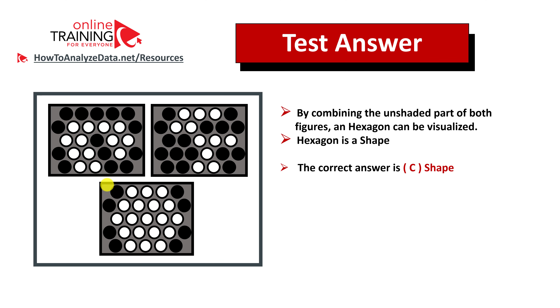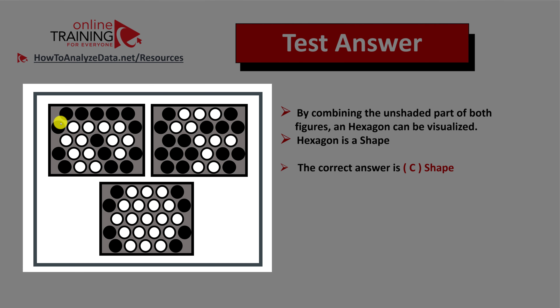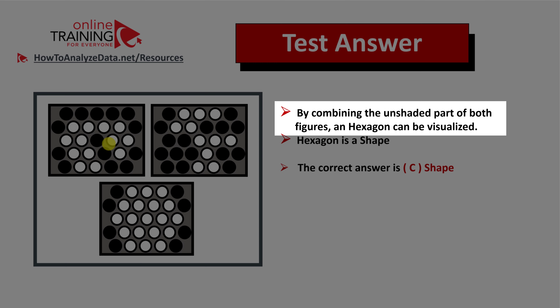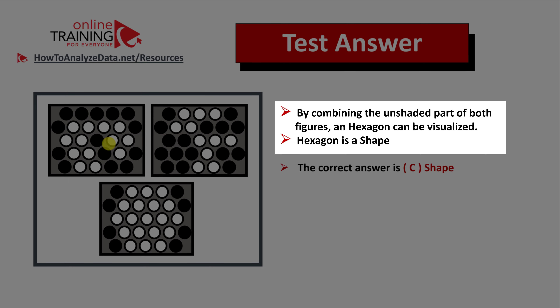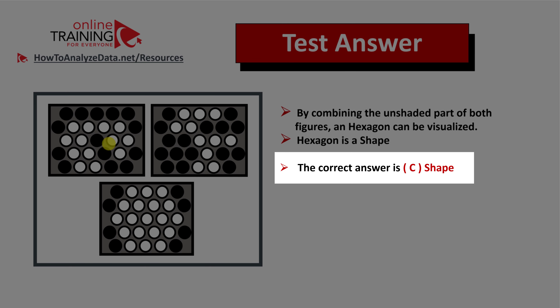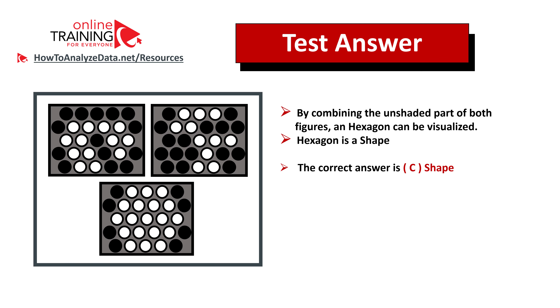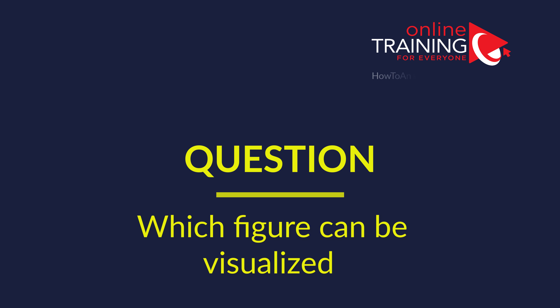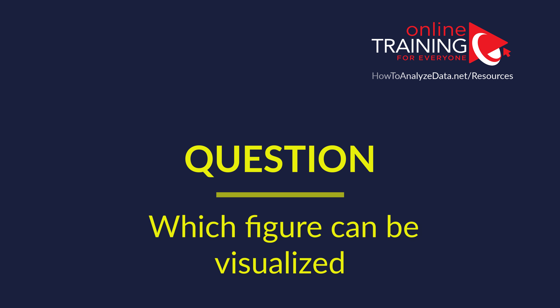The trick here is to try to visualize it in your head, which is quite hard, but in case you have access to paper or a whiteboard, try to take advantage of those tools. Let's recap: by combining the unshaded parts of both figures, a hexagon can be visualized, and hexagon is the shape, so the correct answer is choice C.